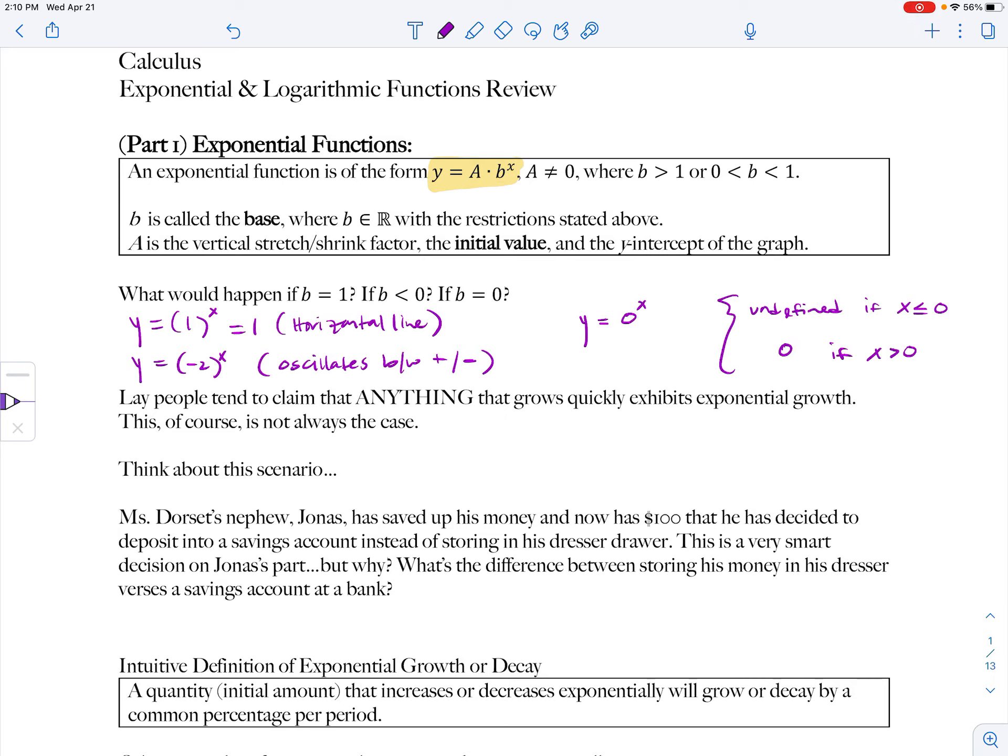Now, exponential functions model exponential growth or decay for us depending on what the base is. Now, lay people tend to claim that anything that grows quickly exhibits exponential growth. This, of course, is not always the case. And you guys know from your pre-calc exponential functions that not everything exhibits exponential growth. Just because something grows, gets really large, does not mean it represents exponential growth. It can exhibit linear growth. There's a lot of other functions that can model growth.